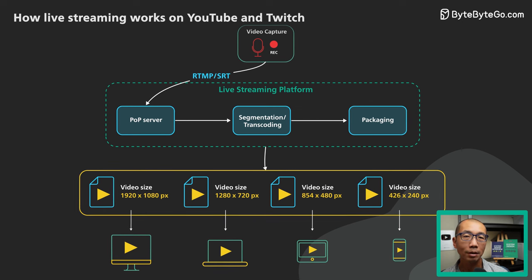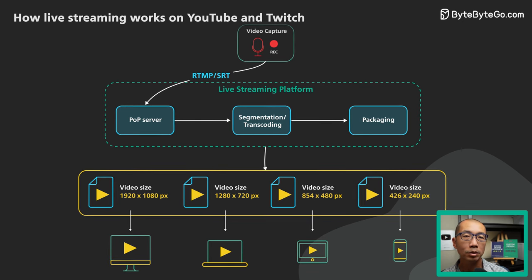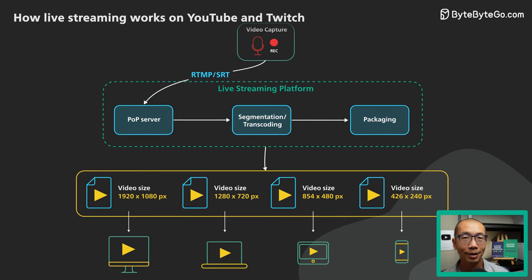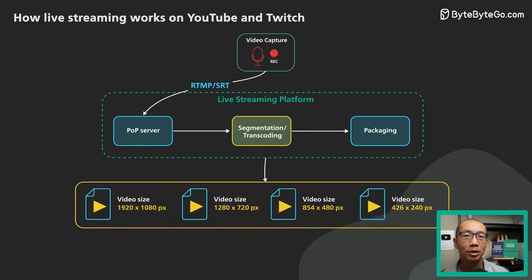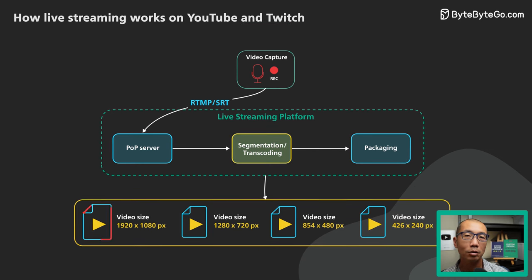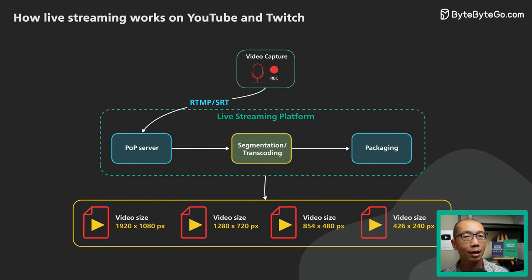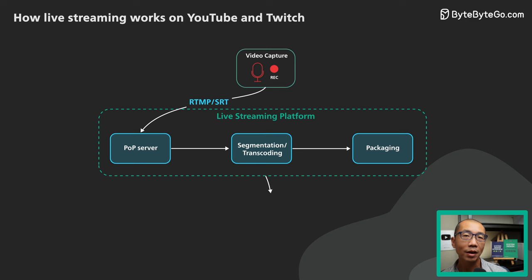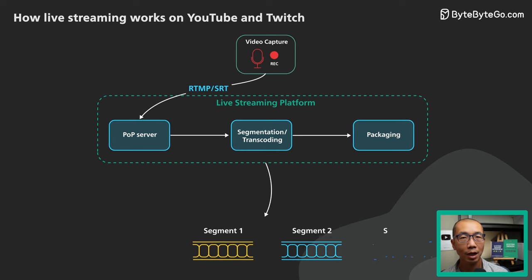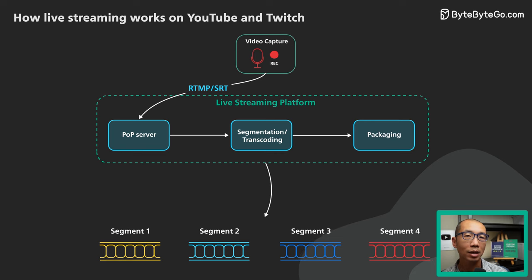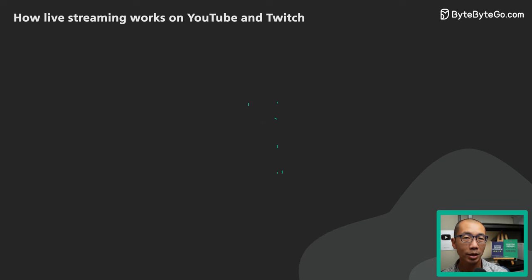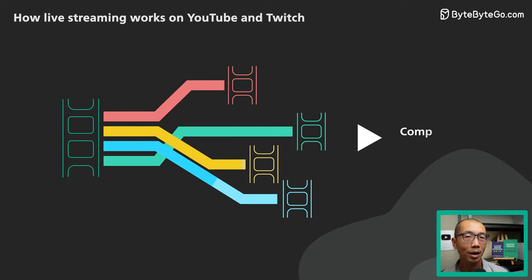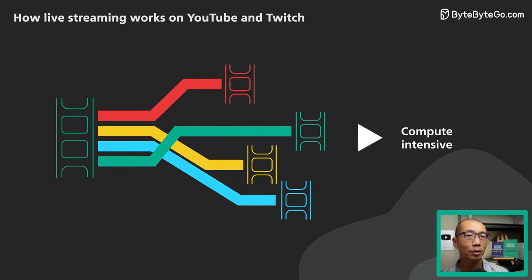The exact processing steps vary by platform and output streaming format, but generally fall into the following categories. First, the incoming video stream is transcoded to different resolutions and bit rates — essentially different quality levels. The transcoded stream is then divided into smaller video segments a few seconds in length, a process called segmentation. Transcoding is compute intensive; the input stream is usually transcoded to different formats in parallel, requiring massive compute power.